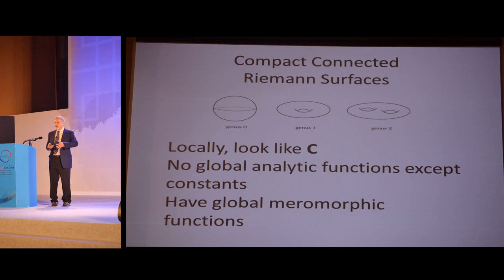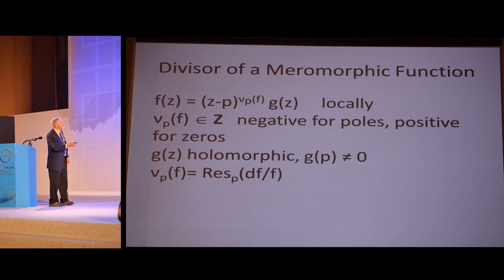I want to start with compact connected Riemann surfaces as motivation. It's interesting that of the four Fields medalists, in Professor Mirzakhani's work she used these surfaces over C, and in Professor Bhargava's work he uses their incarnation as algebraic curves. I'll talk about that connection a little bit later. By the maximum principle, there are no global analytic functions on these except constants, but they do have global meromorphic functions.